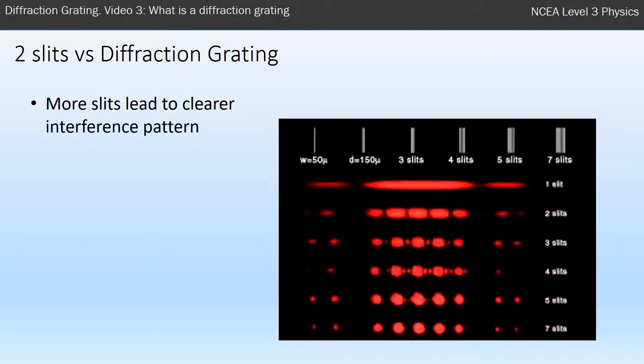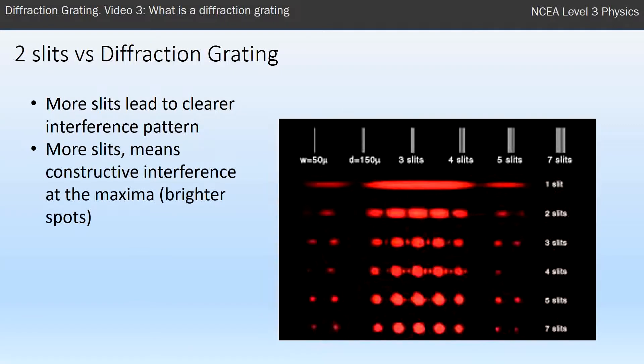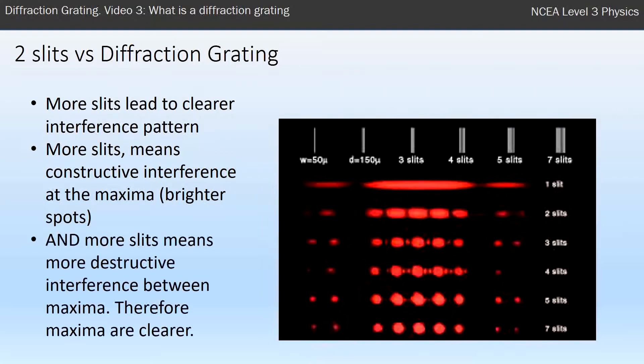You can see that this diagram goes from one slit down to seven slits. The more slits you have, the clearer the interference pattern is. Why is that? When you've got more slits, you've got more light coming through, more diffraction happening, and more chances for constructive interference to happen. So the bright spots—as you get towards the seven slits down there—get brighter and brighter.